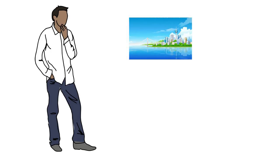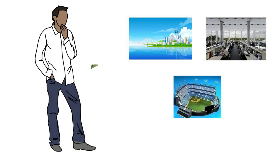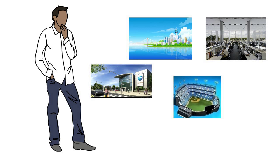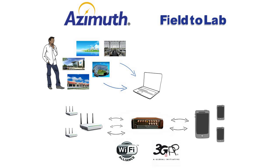Let's go back to Sam and his need to test in a real-world environment. Azimuth field-to-lab is designed to allow real-world RF conditions captured through scanners or device logs to be easily and accurately replayed in the lab. Whether driving through a city or walking through an office building or sports arena, environments with multiple access points and highly dynamic power, velocity, and noise can be recreated in the Azimuth solution.